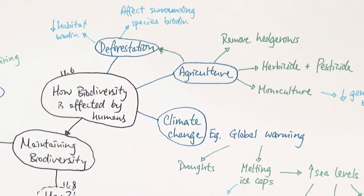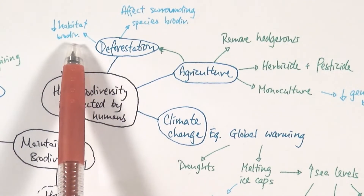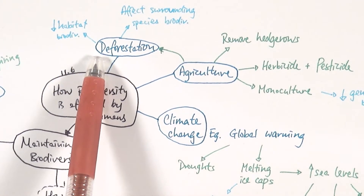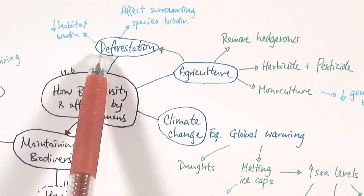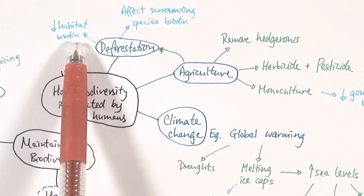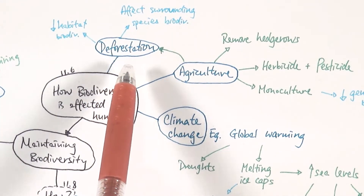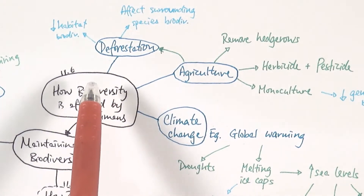There are three points on how biodiversity is affected by humans. Starting with deforestation: this is when trees are chopped down to make paper, furniture, or to clear ground for farms and crops. This obviously decreases habitat biodiversity by destroying the habitats of many organisms — bacteria, small insects, or birds. It also affects surrounding species biodiversity, since not just the trees but also the soil and surrounding areas can be impacted.